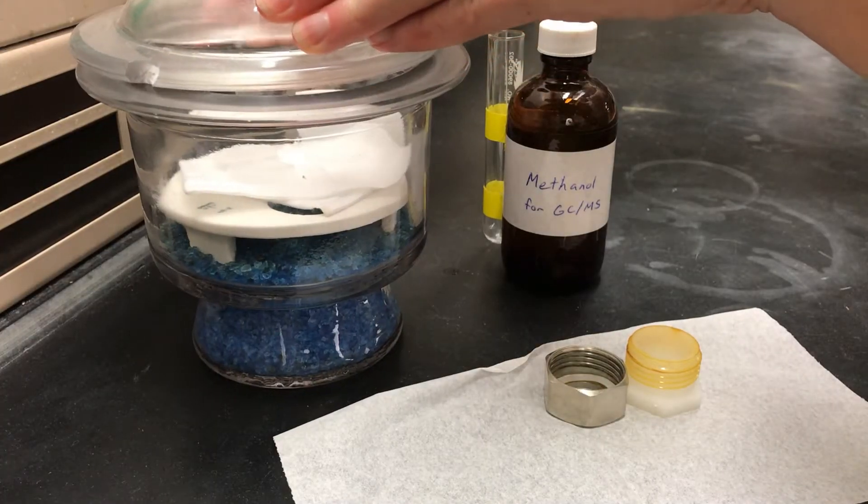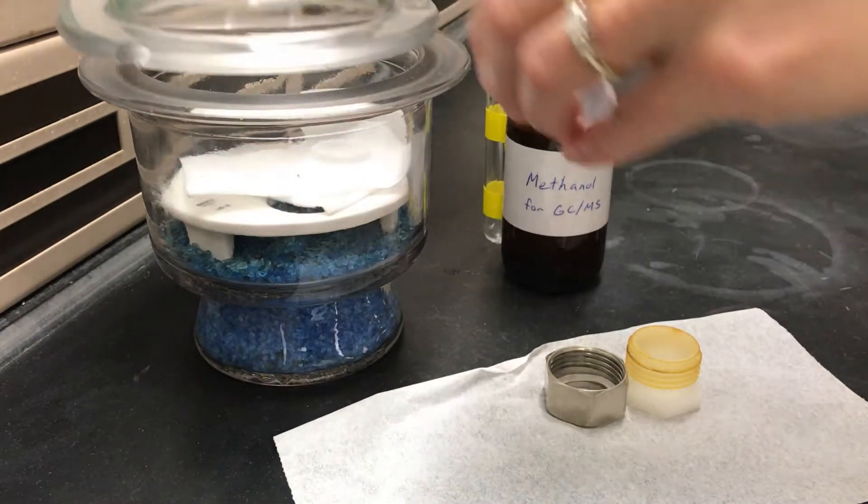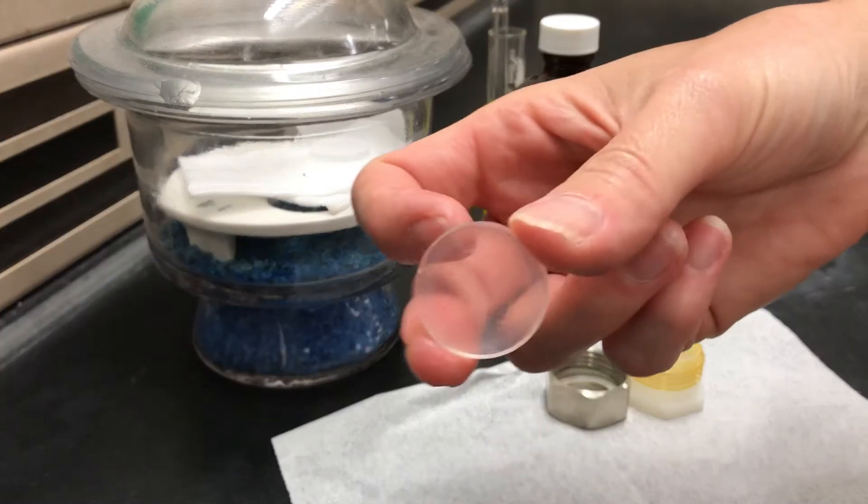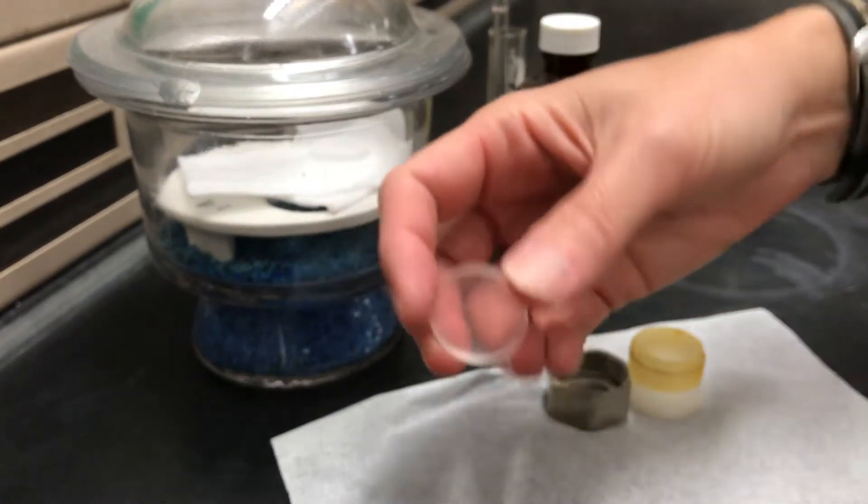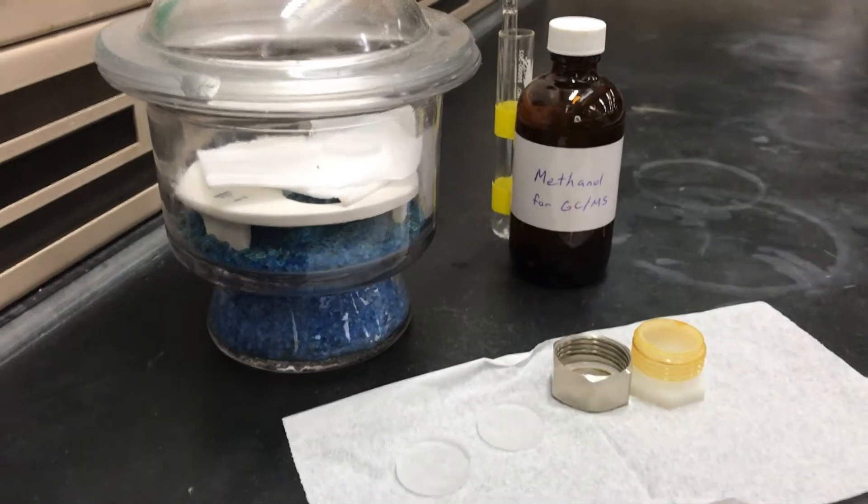The first thing we'll do is remove two salt plates from the desiccator. The ones that I use are made of sodium chloride and they're a crystalline form so they're transparent. But most importantly they're transparent to IR in the regions that most organic molecules absorb.